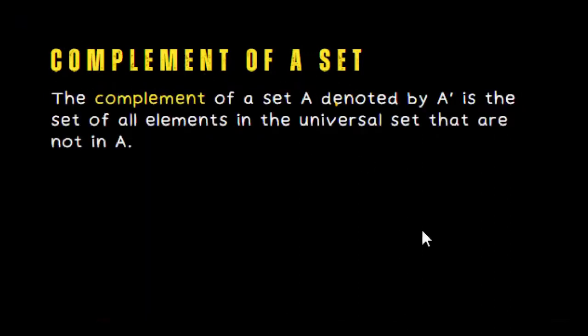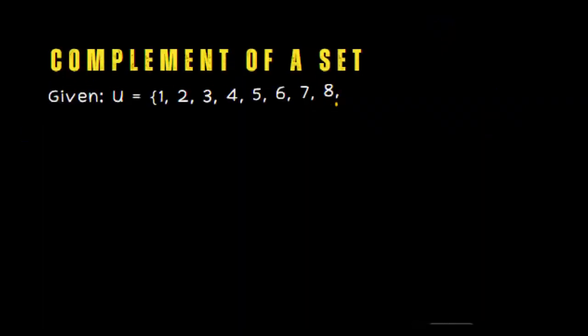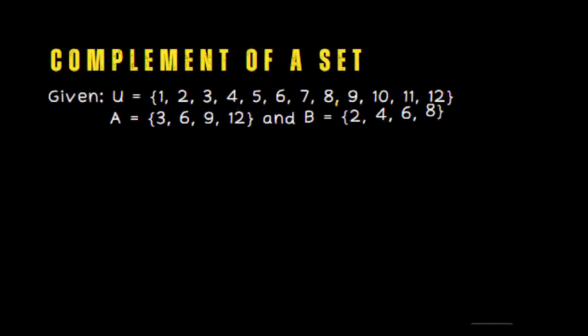When we say complement of a set, the complement of a set A denoted by this symbol, A with an apostrophe, is the set of all elements in the universal set that are not in A. So what does it mean?